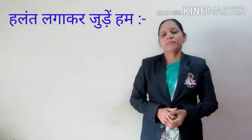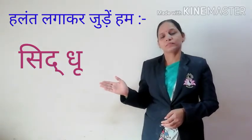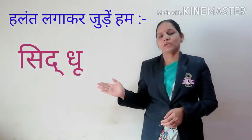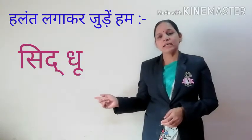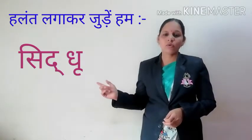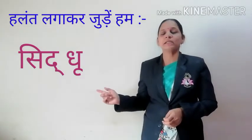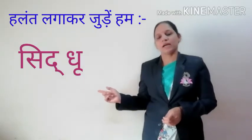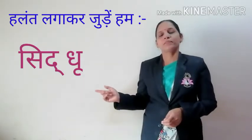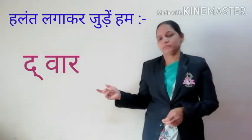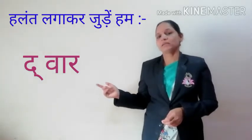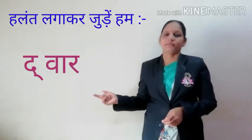इसमें पहला है सिद्धू। द के नीचे हलंत लगाया गया है - सिद्धू। इस शब्द में द के नीचे हलंत लगाया गया है। दुसरा है द्वार। द्वार - द के नीचे हलंत लगाया है।